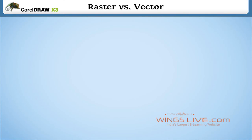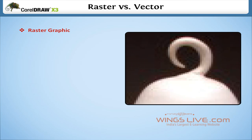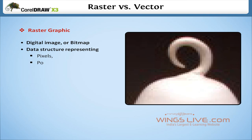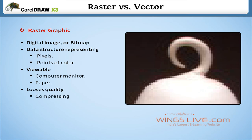Raster vs Vector. In computer graphics, a raster graphics image, also known as digital image or bitmap, is a data structure representing a generally rectangular grid of pixels or points of color. This is viewable through a computer monitor, paper or other display medium, but loses quality while compressing or enlarging any image.